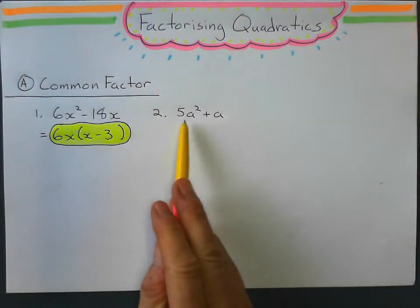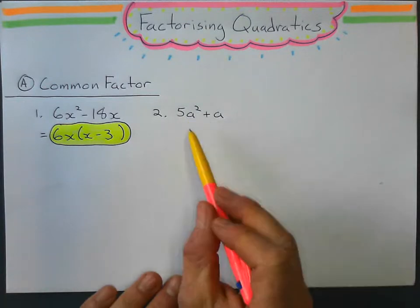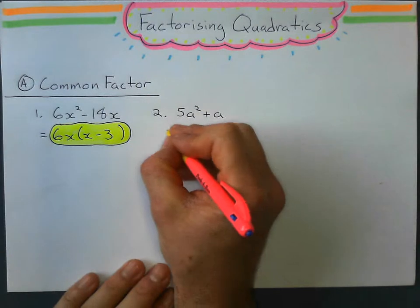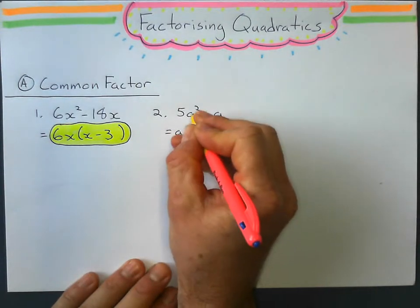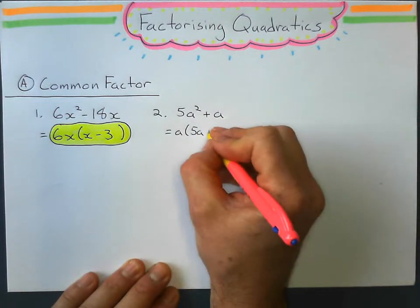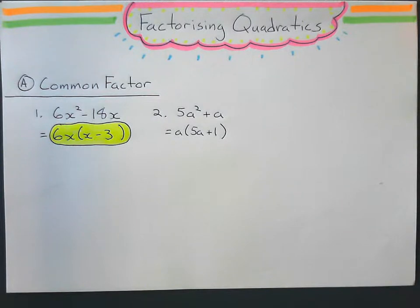Same example here, it's still a quadratic because I've got a squared. This time a is a common factor. I don't have any number common factors. a times what is 5a squared, it would be 5a. a times what is positive a, it would be positive 1. Nothing too different there.